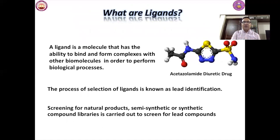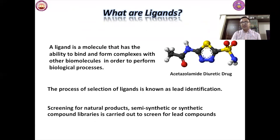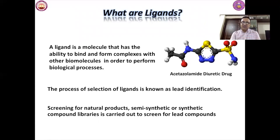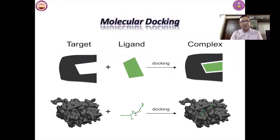Skipping the previously covered ligand-based and structure-based slides: a ligand is a molecule that has the ability to bind and form complexes with other molecules in order to perform biological processes. An example is acetazolamide in diuretic drugs. The process of selection of a ligand is known as lead identification; screening for natural products, semi-synthetic, or synthetic libraries is carried out to screen for lead compounds.